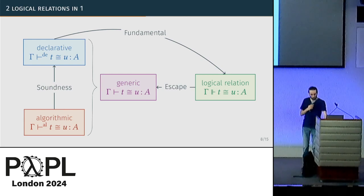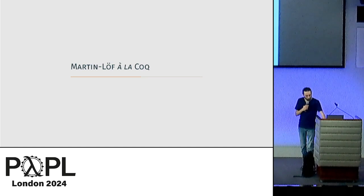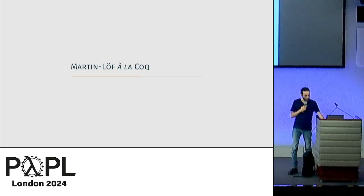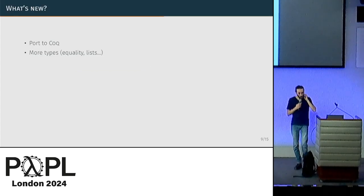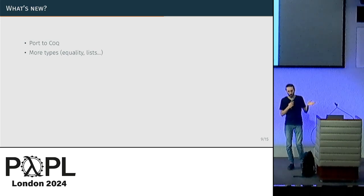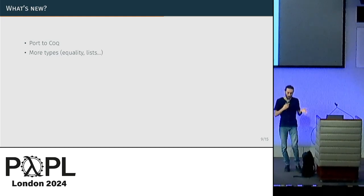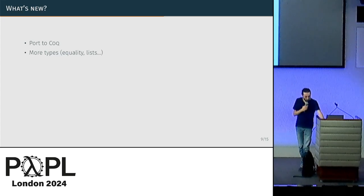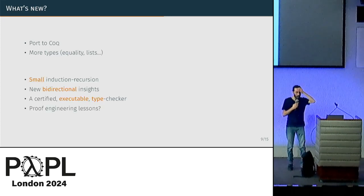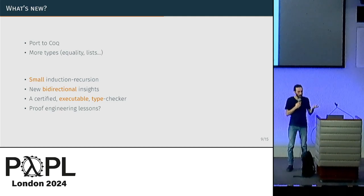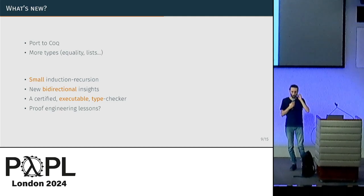That's mostly what's happening in the Agda formalization. Now for what we've done: the core idea is still the same, but with a bunch of extensions. We've ported the thing to Coq — not maybe so interesting by itself. We also have extra type formers: the original formalization only had natural numbers as inductive types, and we handle equality types, lists, and W-types are on their way. The more interesting contributions are how we tackle the induction-recursion problem using the small induction-recursion technique, bidirectional typing insights, and obtaining an executable checker.